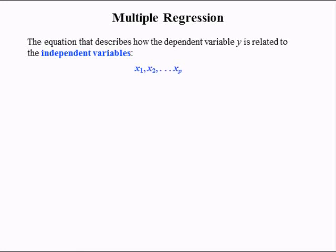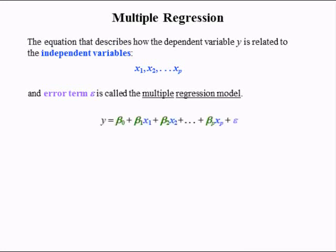The equation that describes how the dependent variable y is related to the independent variables x1, x2, out to xp and error term epsilon is called the multiple regression model, which is y equal beta 0 plus beta 1 times x1 plus beta 2 times x2 plus beta p times xp plus the error term epsilon. Where beta 0 is the unknown value of the intercept and beta 1 to beta p are the unknown slope parameters.